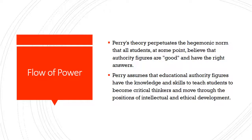With regards to flow of power, William G. Perry's theory of intellectual and ethical development perpetuates the hegemonic norm that all students, at some point, believe that authority figures are good and have the right answers. This ignores circumstances in which individuals have deeply rooted conflict with authority figures — for example, someone who grew up in a region where political unrest and conflict interferes with safe day-to-day living. Additionally, Perry's theory assumes that educational authority figures have the knowledge and skills to teach students to become critical thinkers and move through the positions of development. Given that many current-day higher education courses are in large group settings with hundreds of students, we must not assume that all students are getting the one-on-one education necessary to promote development of meaning making. The same can be said for a student who is solely an online learner.